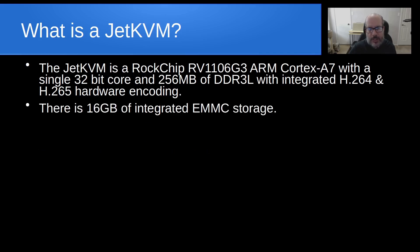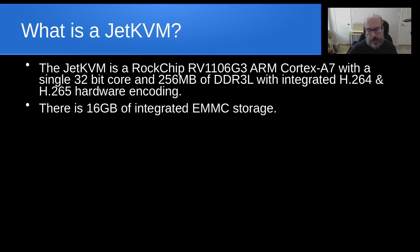It does have integrated H.264 and H.265 hardware encoding. There is 16 gigabytes of integrated eMMC storage, the majority of which is used for the JetKVM software, but there's around four to five gigabytes reserved for space where you can put an ISO file if you want to load it directly on the JetKVM. I typically use PXE booting to something like iVentoy or netboot.xyz, since that four to five gigabytes is pretty limited storage, but it's a nice addition.